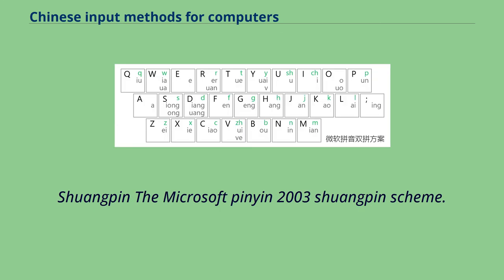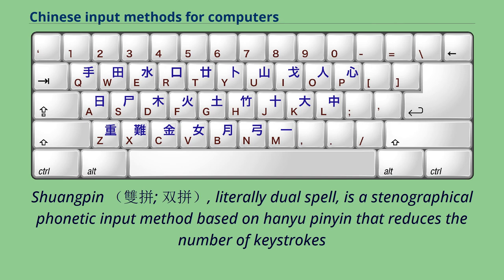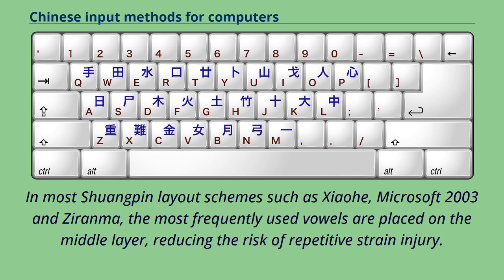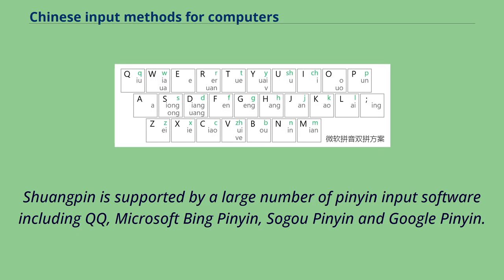Shuangpin, literally 'dual spell,' is a stenographical phonetic input method based on Hanyu Pinyin that reduces the number of keystrokes for one Chinese character to two, by distributing every vowel and consonant composed of more than one letter to a specific key. In most Shuangpin layout schemes such as Xiaohe, Microsoft 2003, and Ziranma, the most frequently used vowels are placed on the middle layer, reducing the risk of repetitive strain injury. Shuangpin is supported by a large number of Pinyin input software including QQ, Microsoft Bing Pinyin, Sogou Pinyin, and Google Pinyin.